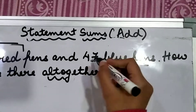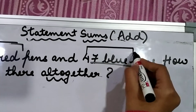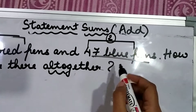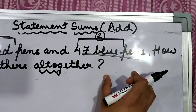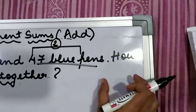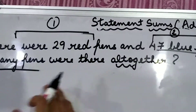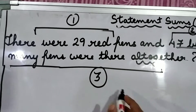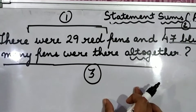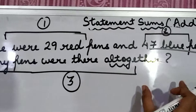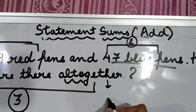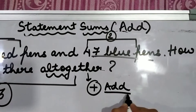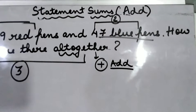Now let's come to the next part. This is the second part: 47 blue pens. So this is the second part of the question — 47 blue pens. Then the last part says: how many pens were there all together? This is the third part of the question which we need to solve. All together means add. We need to add.